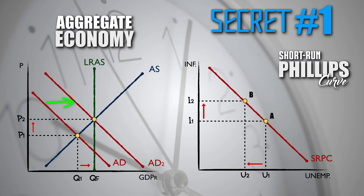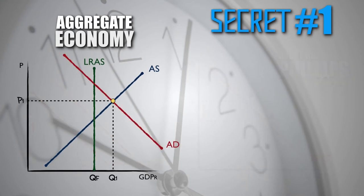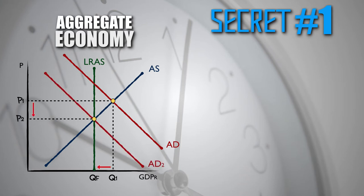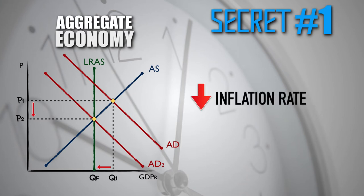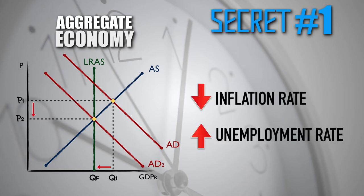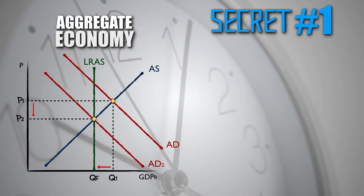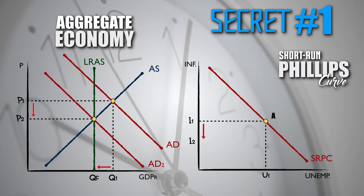Rightward shift of the aggregate demand curve — movement leftward along the Phillips Curve. When a change occurs in SIGX that causes aggregate demand to decrease, the aggregate demand curve will shift to the left. To show the decrease in the inflation rate and the increase in the unemployment rate that accompanies the decrease in aggregate demand, there will be a movement rightward along the short-run Phillips Curve from one point to another. Leftward shift of the aggregate demand curve — movement rightward along the Phillips Curve.